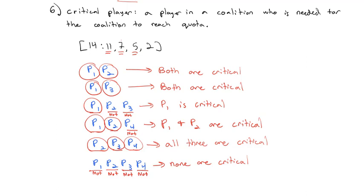Going forward, we'll be interested in how often someone is a critical player across all winning coalitions, because being a critical player gives you power — without your vote, a motion cannot pass. Before we measure power formally, practice with the vocabulary and notation: identifying dictators, dummies, critical players, and veto power players. In our next video, we'll actually look at measuring how much power our players have.